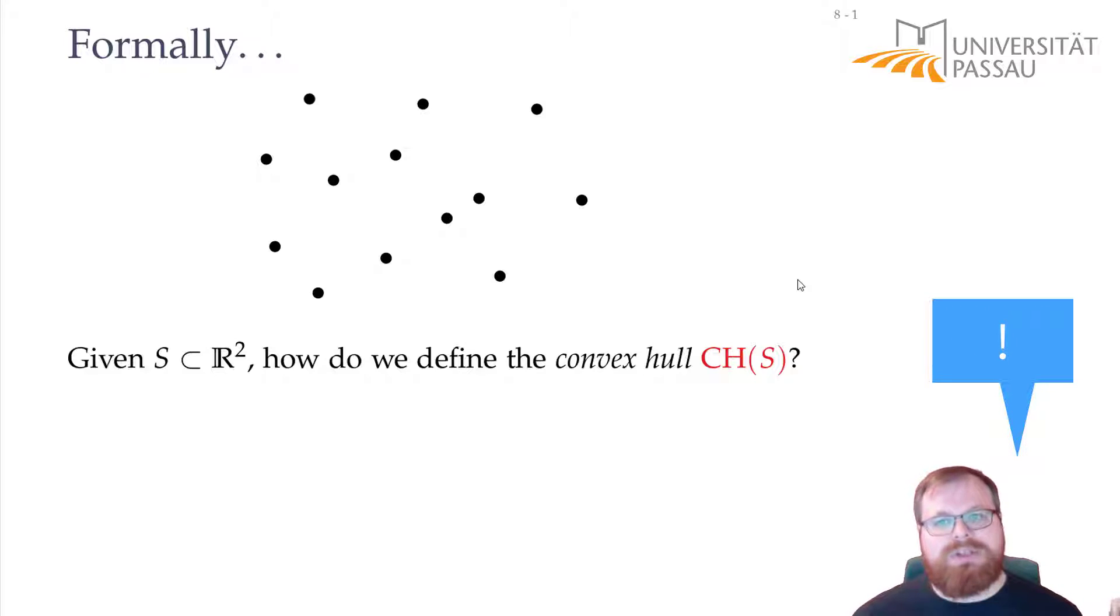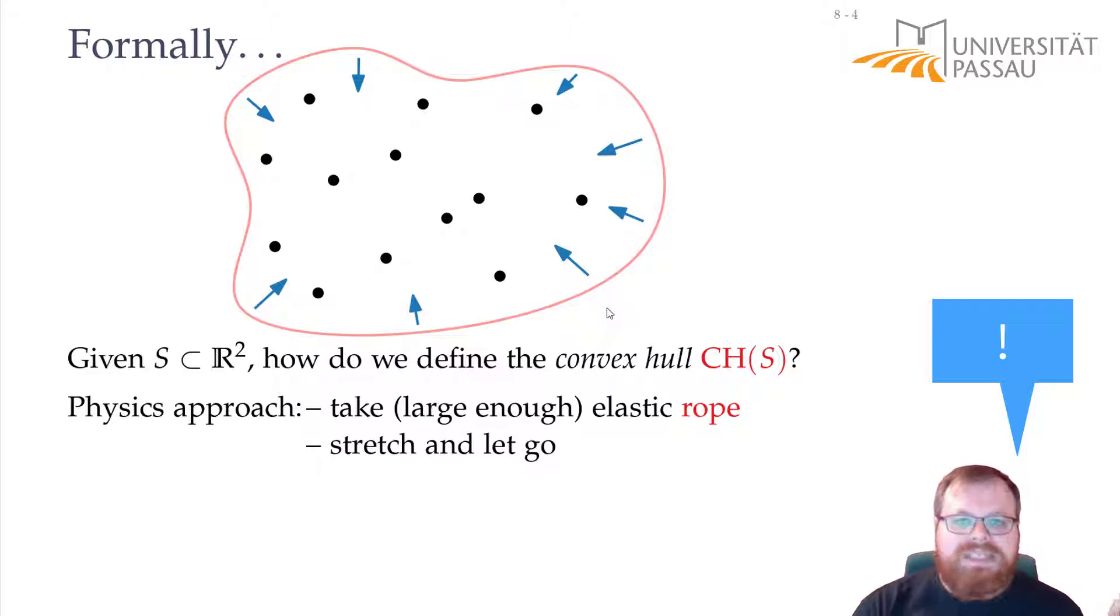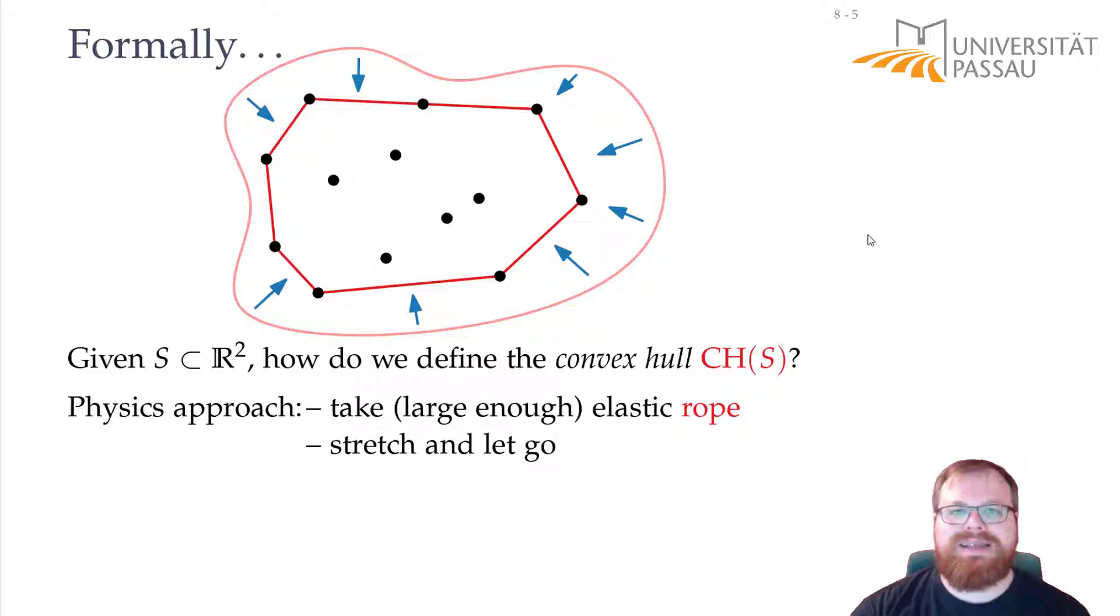There is one nice approach that we can use, which is the physics approach. Assume you take a piece of wood, and for each of these points, you put a nail in it. And now, I take an elastic rope, and I stretch it, and let go. So, we have an elastic rope like this, and after I let it go, it snaps, and it will stop exactly at the outer nails. And this gives us the convex hull. This is the physics approach, how in practice you create the convex hull. We just take this rope, and then take all the points that lie on the rope or inside.